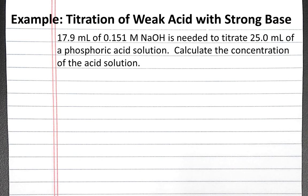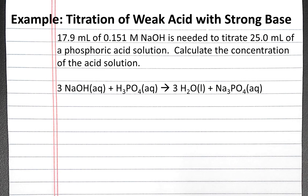Our first step is to write a balanced chemical equation for the acid-base titration reaction. It will be 3 sodium hydroxide plus 1 phosphoric acid produces 3 water plus sodium phosphate. We can write the information below the species in the balanced chemical equation that we know from the problem.